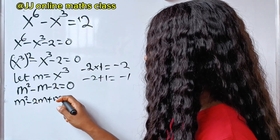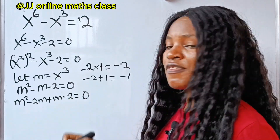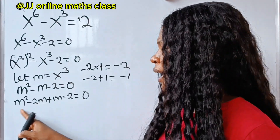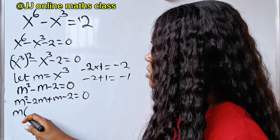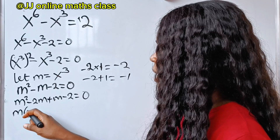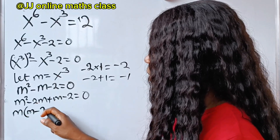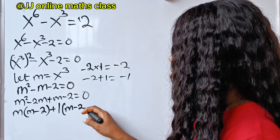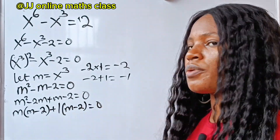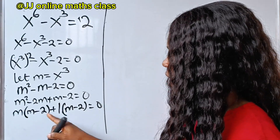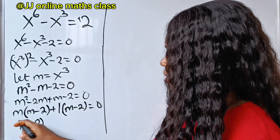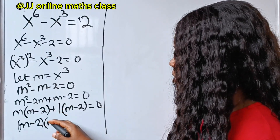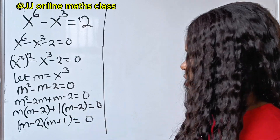Plus m minus 2 is equal to 0. Let's factorize by grouping. m is common in the first two terms, so we factor it out: m squared divided by m gives m, and minus 2m divided by m gives 2. For the last two terms they share only 1 in common, so we repeat minus m minus 2 equals 0. So we have m minus 2, multiplied by m plus 1, is equal to 0.